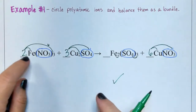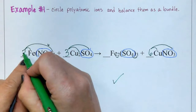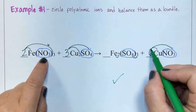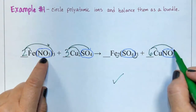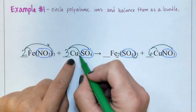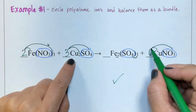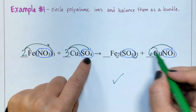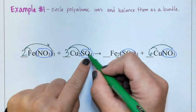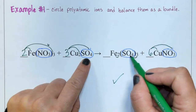Final check: two irons, two irons. Two times three is six nitrates, six times one is six nitrates. Three times two is six coppers, six coppers. And then three times one is three sulfates, and this is three sulfates.